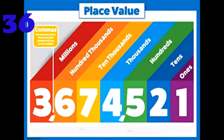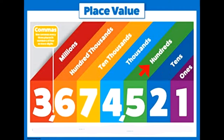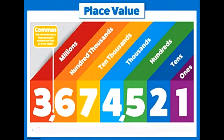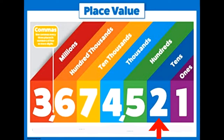Let's take a look at the place value chart. We read the places from right to left: ones, tens, hundreds, thousands, ten thousands, hundred thousands, and millions. Let us read the number 3,674,521. The seven-digit number is separated by commas.